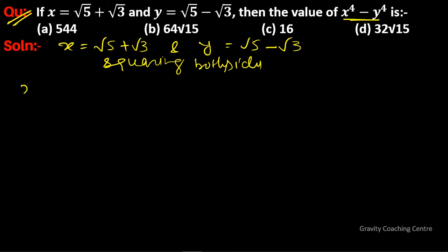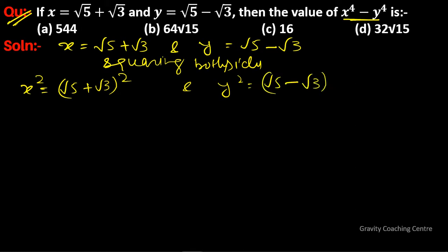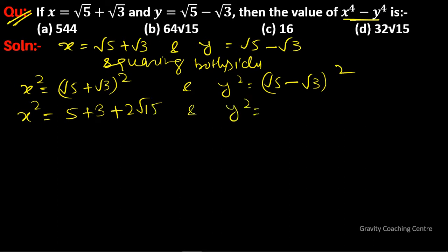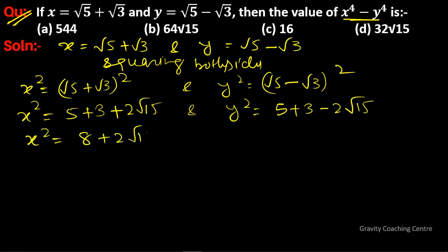So we get x squared equal to (root 5 plus root 3) whole square and y squared equal to (root 5 minus root 3) whole square. Expanding: x squared equals 5 plus 3 plus 2 root 15, and y squared equals 5 plus 3 minus 2 root 15.